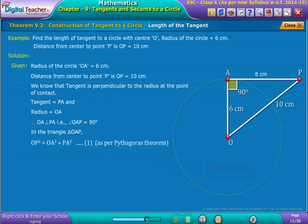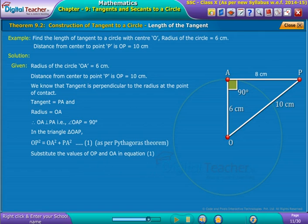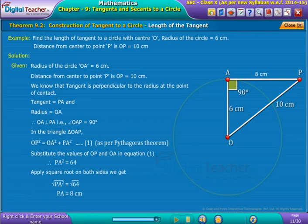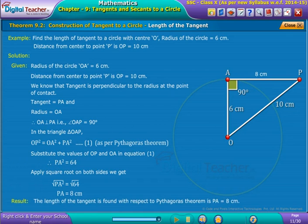Now substitute given values of OA and OP in equation 1. By further simplification we obtain PA equal to 8 cm.